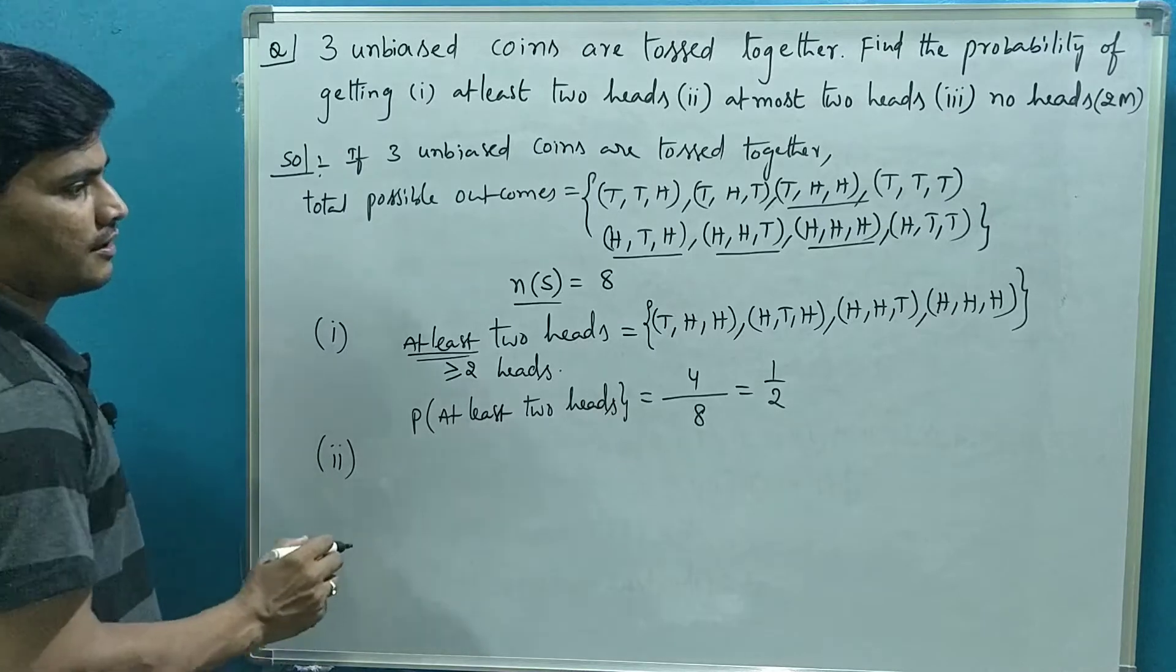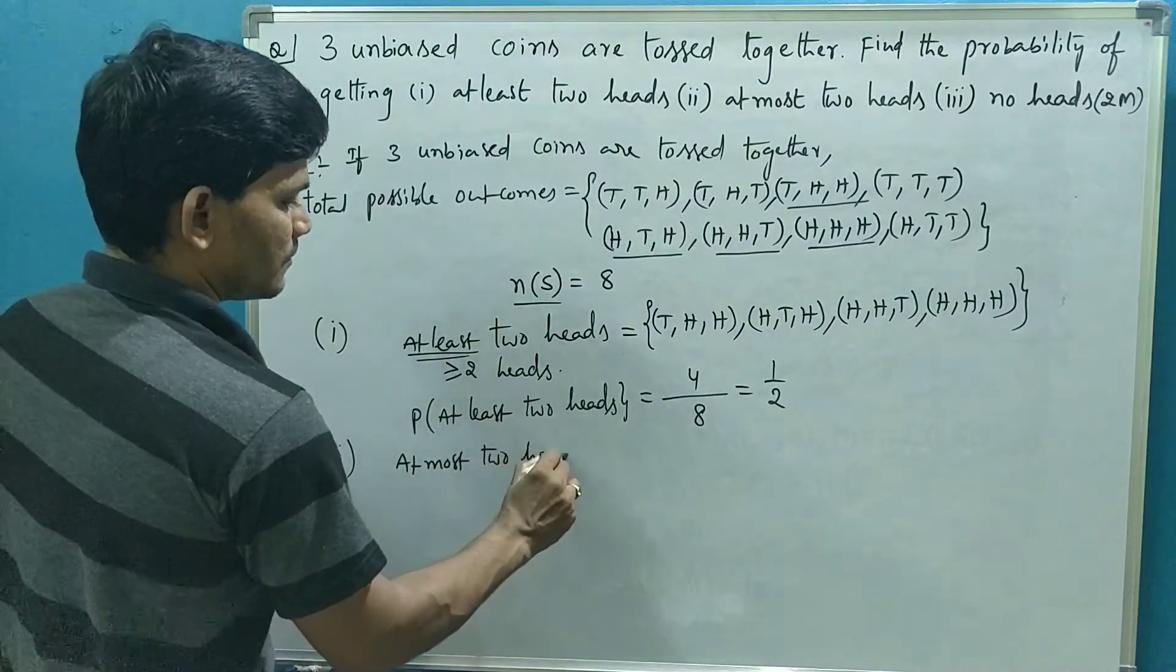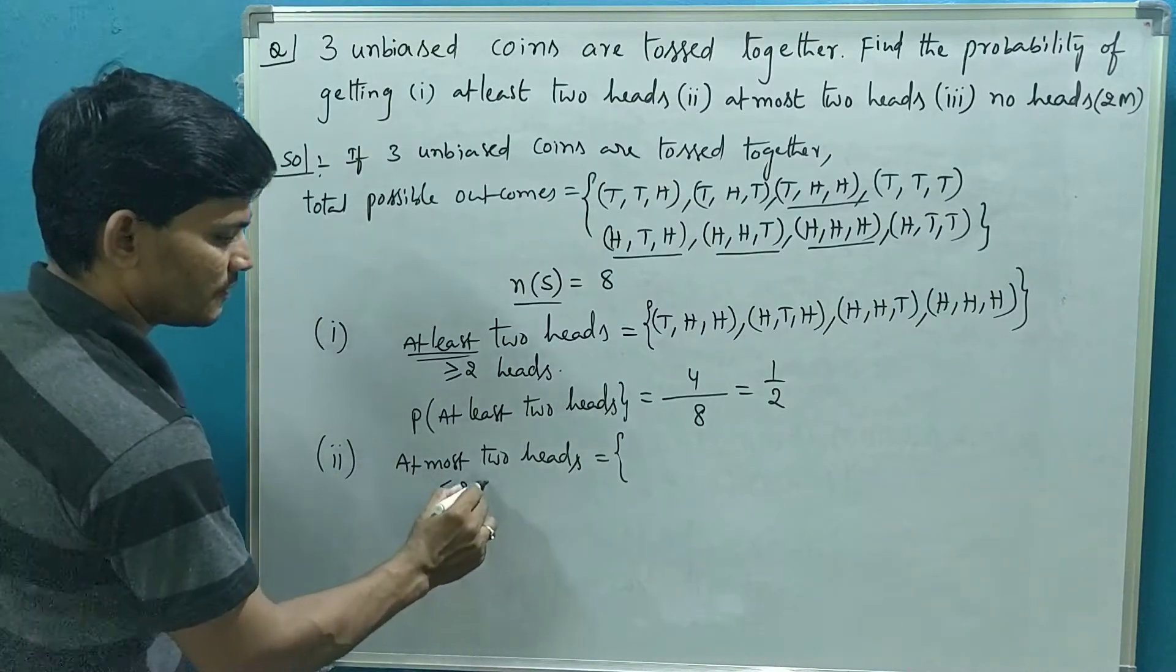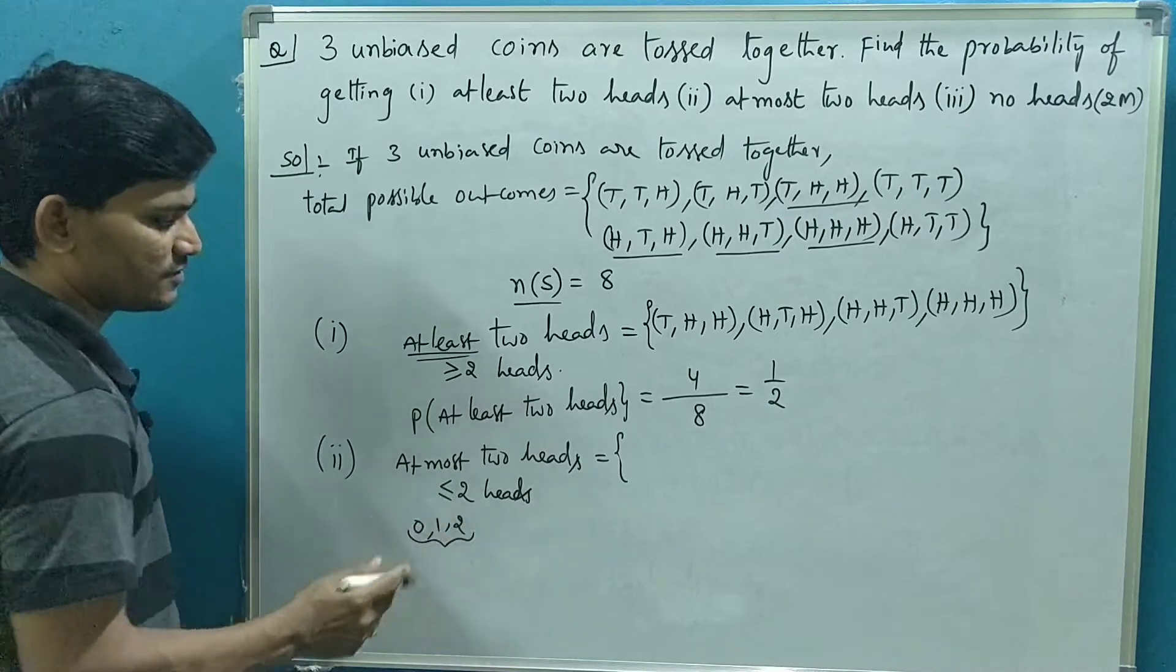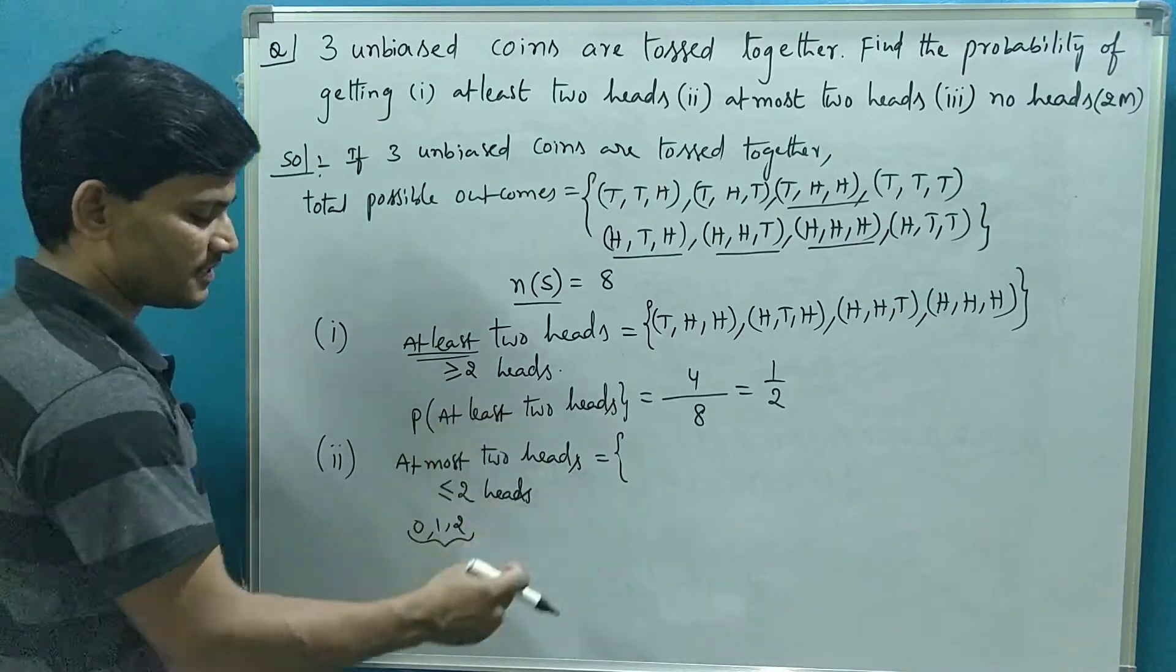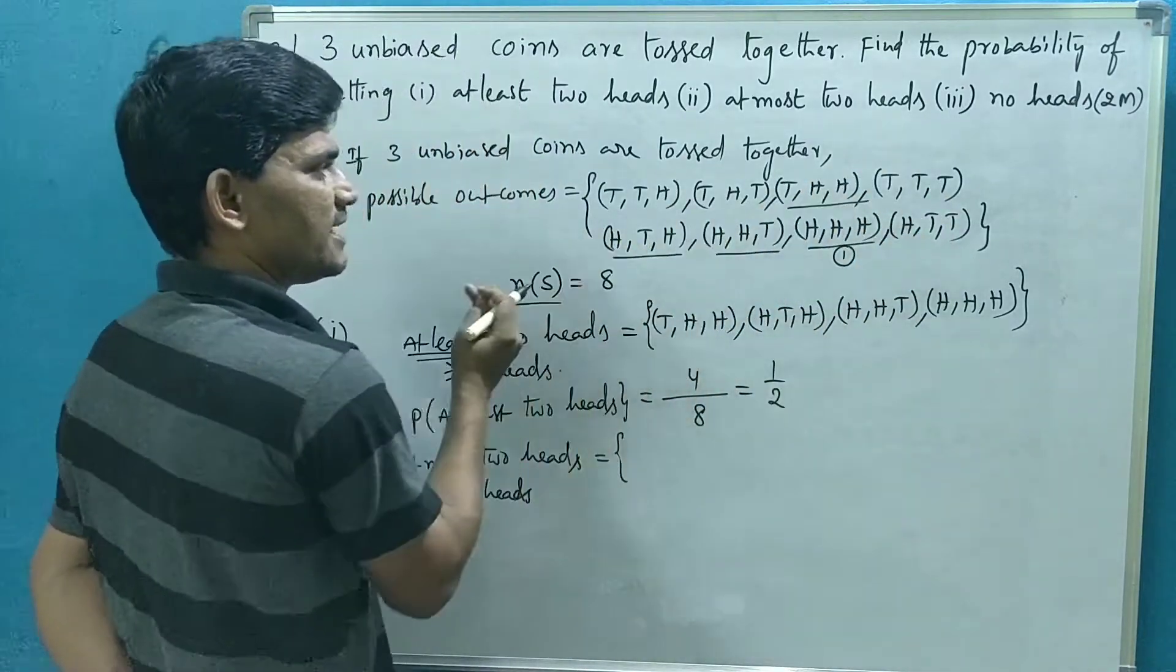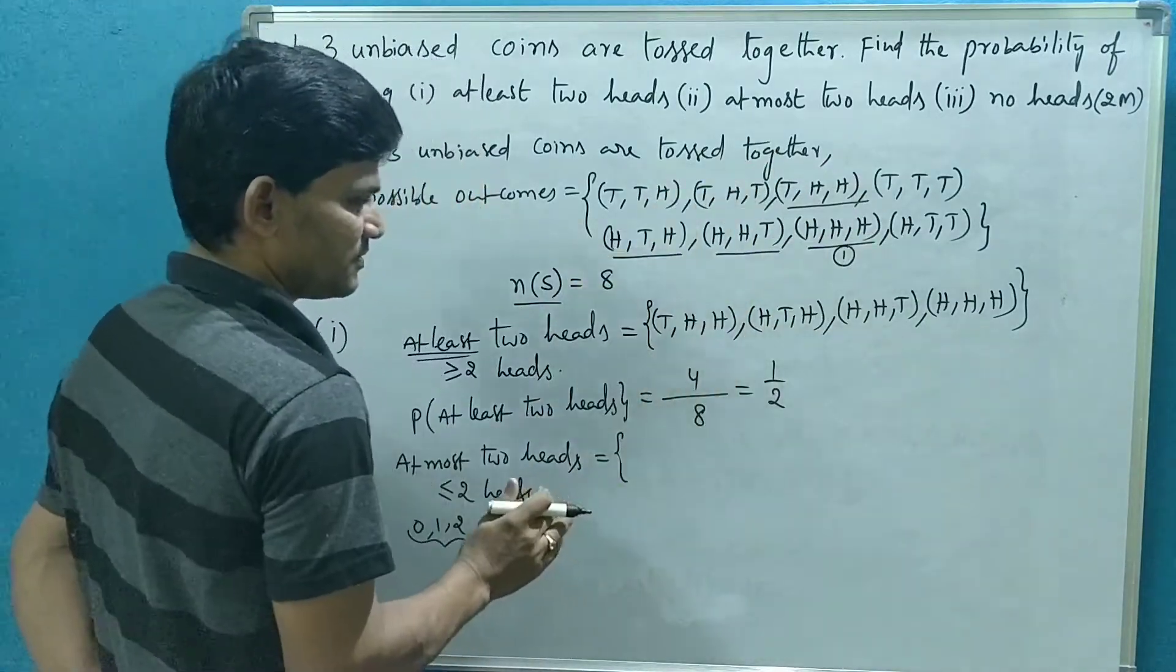Now let us see the second one: at most two heads. It is nothing but at most means maximum, that is less than or equal to 2. You may understand here: two heads or one head or zero heads. So you have to take all outcomes which are having either no heads or one head or two heads. You can't consider the outcome which is having more than two heads.